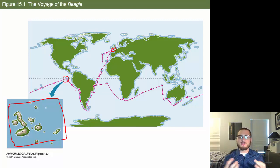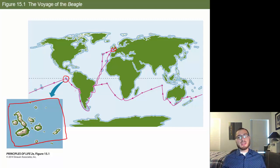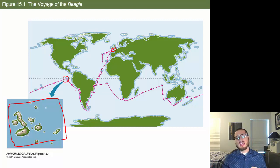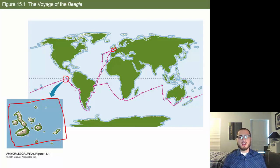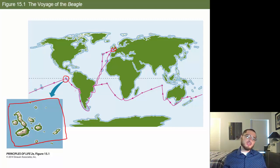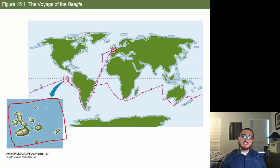Being a young, somewhat silly guy, Darwin was messing with these organisms. He noticed that if he picked up a tortoise and threw it, it would just continue walking toward him — it didn't care. He could throw marine iguanas into the water and they'd climb right back. These organisms on the islands were simply not used to humans, and Darwin found this fascinating.